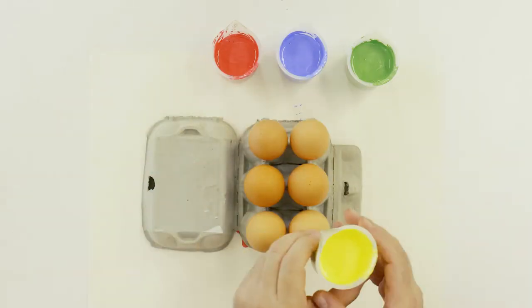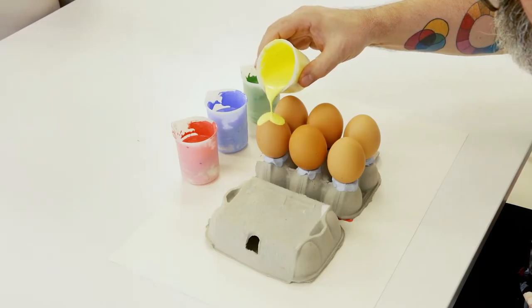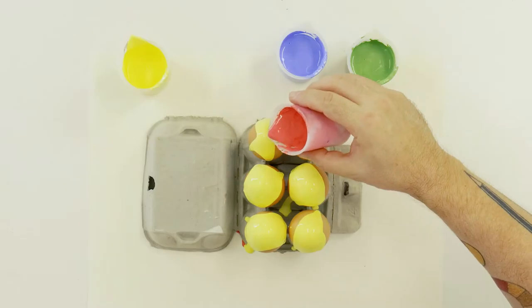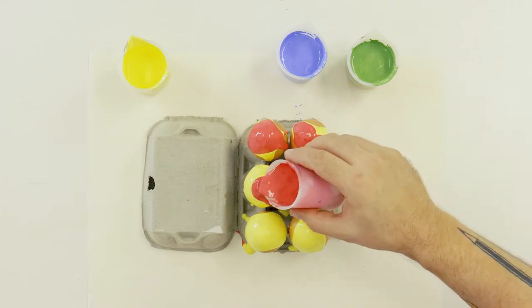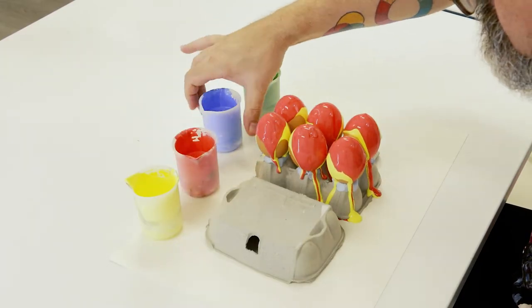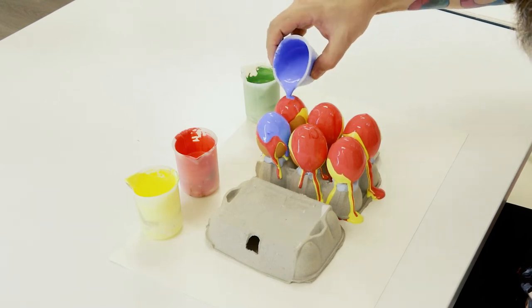We can then start the pour. Begin by pouring the paint slowly over the centre of the egg. Then lay the next layer into the first and so on. Follow the order of colour until the whole egg is covered with paint in interesting layers. Then let them all dry.